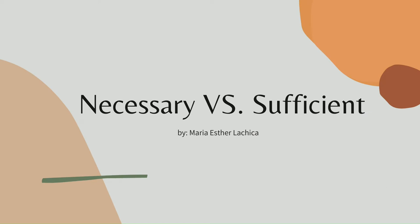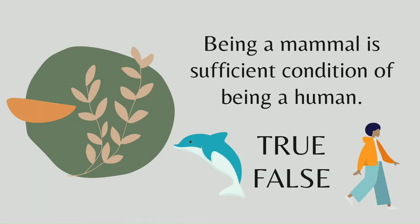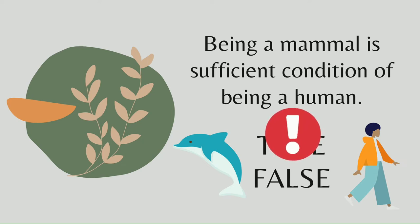Let's further understand the discussion through simple examples using necessary versus sufficient. Here's an example: Being a mammal is a sufficient condition of being a human. Is this true or false? It is false. Being a mammal is not enough to be human, because not all mammals are humans — we also have different animals. So the statement is false.